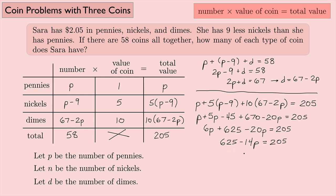Now I can subtract 625 from both sides. If I do that, I get 205 minus 625, that's negative 420. Divide both sides by negative 14, and we get 30 for the number of pennies.